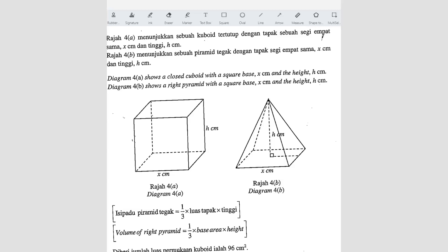Question number 11. Diagram 4a shows a closed cuboid with a square base x cm and height h cm. Diagram 4b shows a right pyramid with a square base x cm and height h cm.